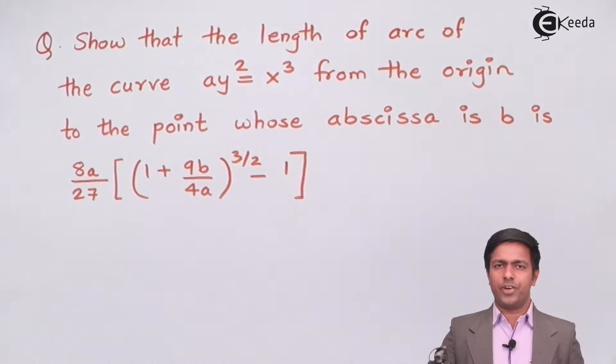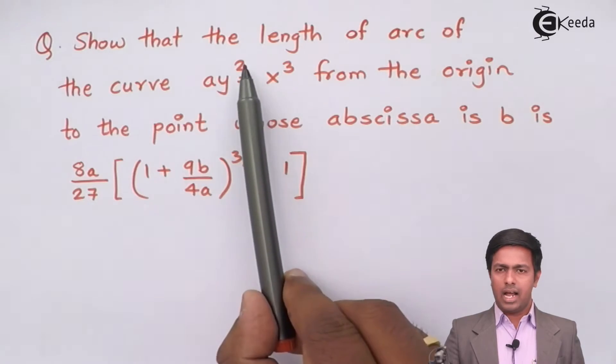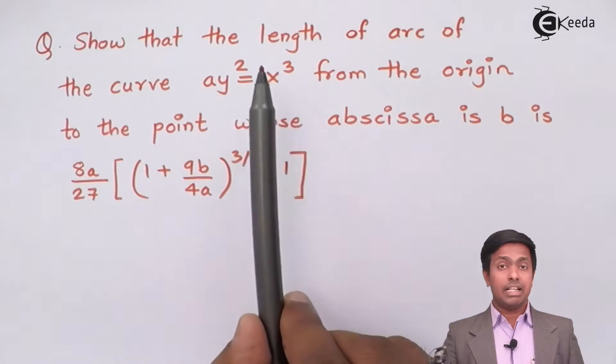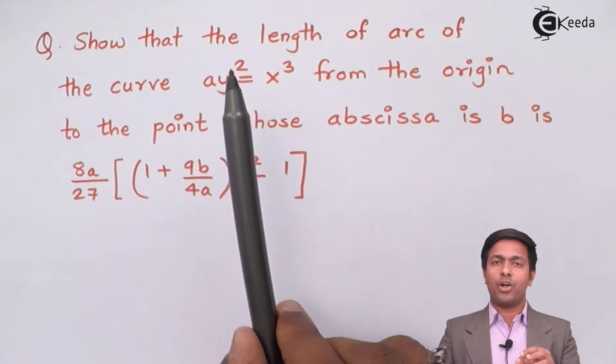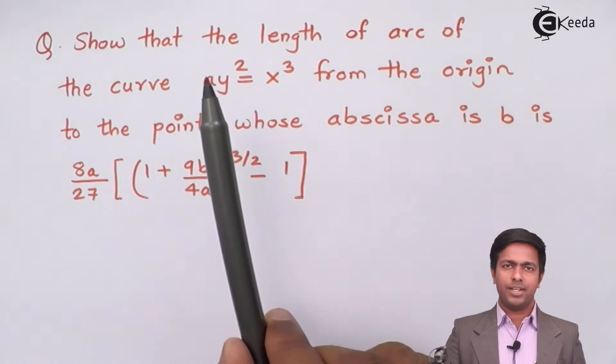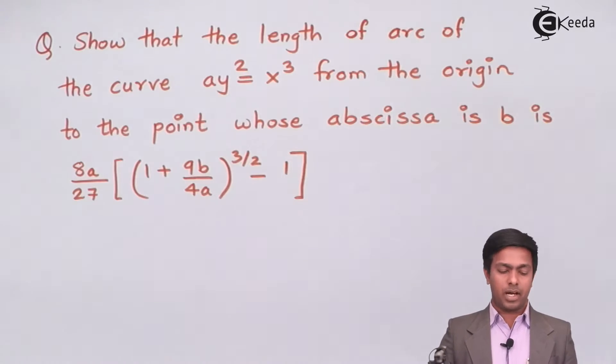Now in the previous video we have studied the basic graphs and their equations. So can you tell me what this curve is? Whenever we have y square and the other term is the odd power of x, such curve is called a semicubical parabola. So it means this is a semicubical parabola.